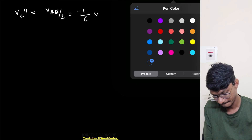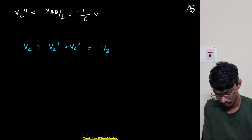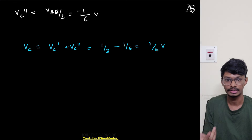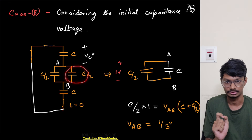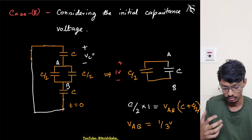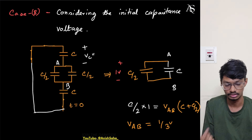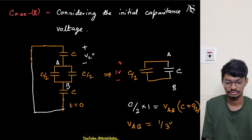The overall voltage Vc equals Vc' plus Vc'', which is 1/3 minus 1/6, equaling 1/6 volt. As homework, you can find the voltage across the other capacitors, or try different initial conditions to understand what is happening in the circuit. If you liked this video, please hit the like button. Thank you for watching.